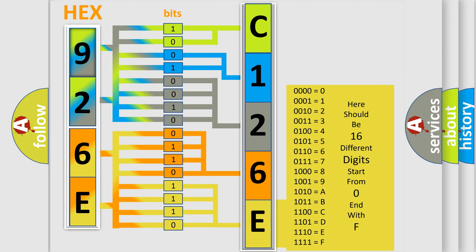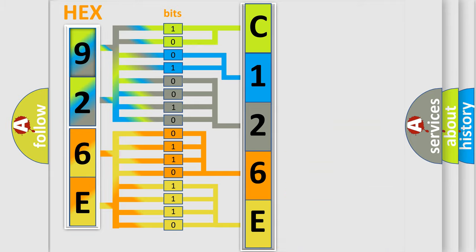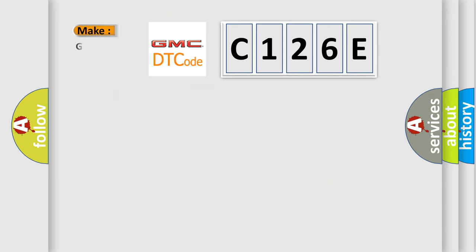We now know in what way the diagnostic tool translates the received information into a more comprehensible format. The number itself does not make sense to us if we cannot assign information about what it actually expresses. So, what does the diagnostic trouble code C126E interpret specifically for GMC car manufacturers?